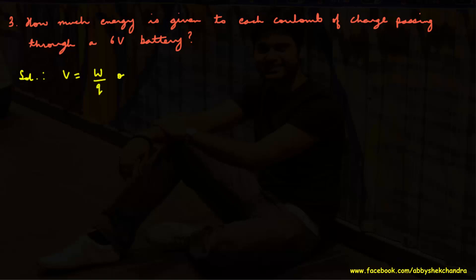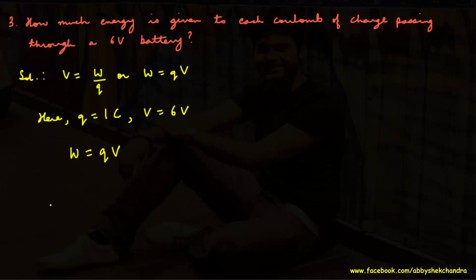Question 3: How much energy is given to each coulomb of charge passing through a 6 volt battery? Here q = 1 coulomb and V = 6 volts. Work done W = q × V = 1 × 6 = 6 joules. This work done in moving the charge through the battery is the amount of energy transferred to the charge, therefore the energy given to the charge equals 6 joules.